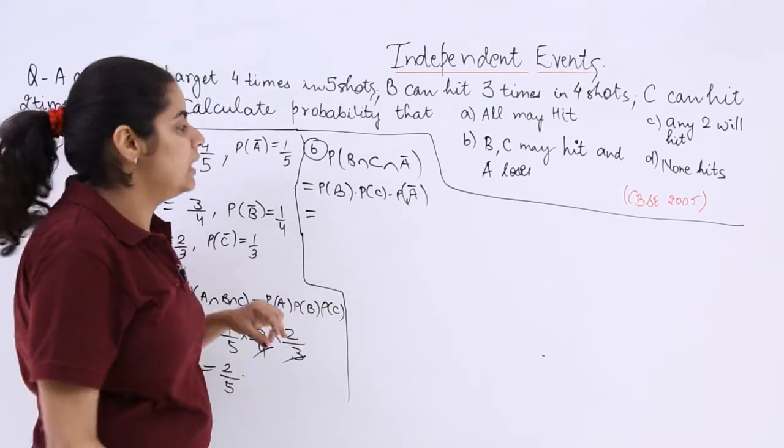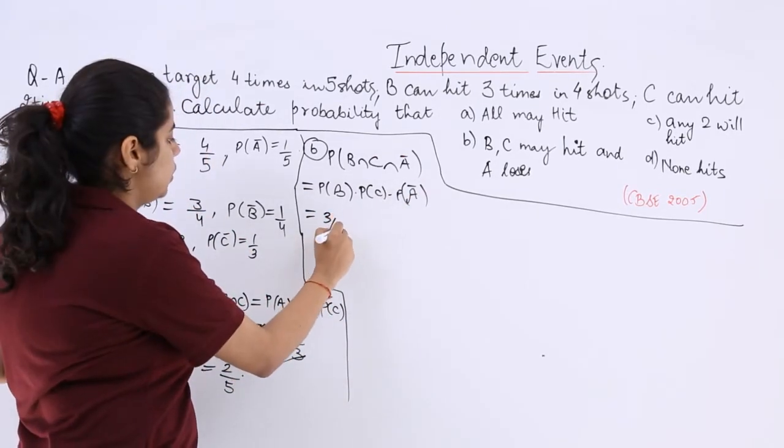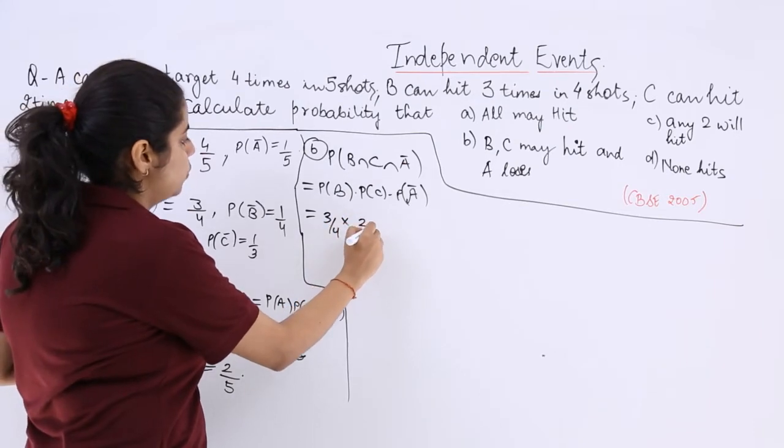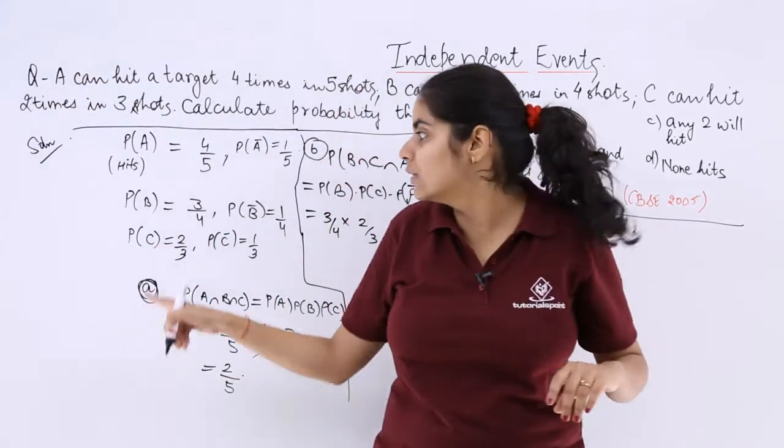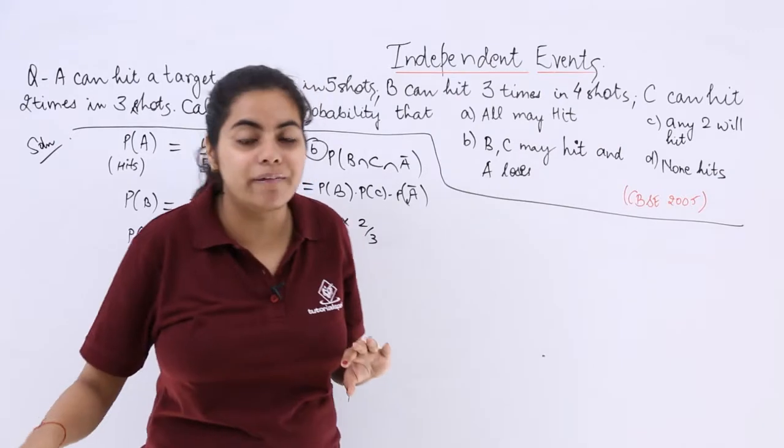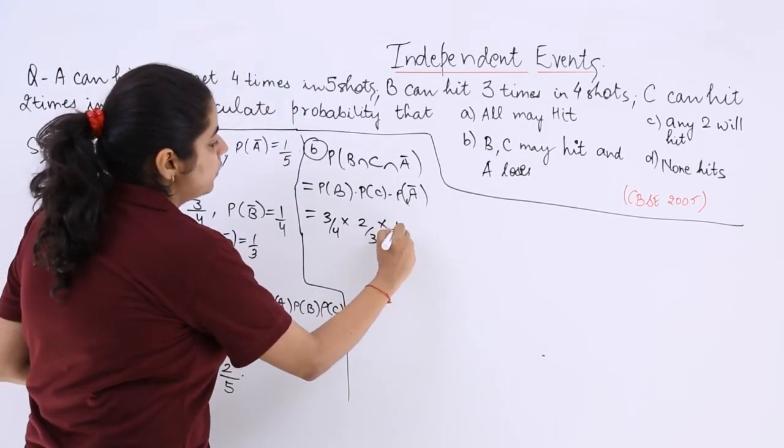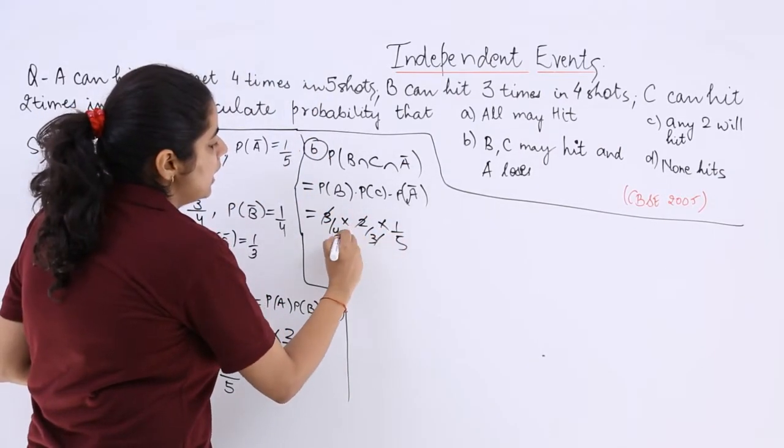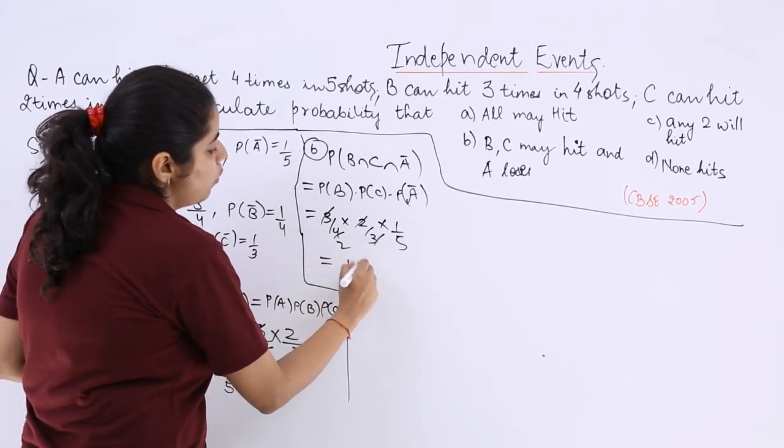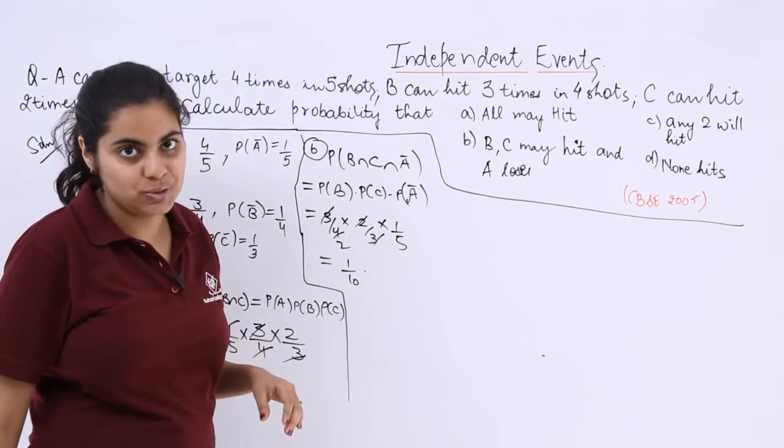Now what we can do is probability of B multiply by probability of C multiply by probability of not A. What is probability of B and C in multiplication? 3/4 multiply by 2/3. You can see from here. We have taken out the data already. What is the probability of not A? 1/5. Again cancel whatever cancels. 1/10 is the answer to this question.